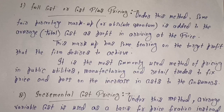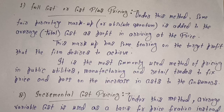Now let us discuss these methods. The first category is cost-based methods, and within it, the first type is full cost or cost-plus pricing. Under this method, a fair percentage markup or absolute quantum is added to the average total cost as profit in arriving at the price.